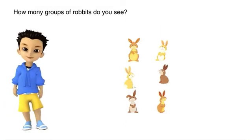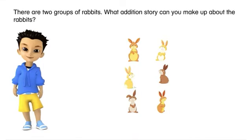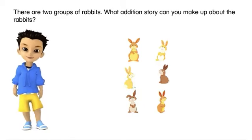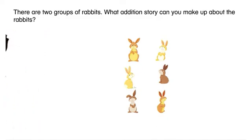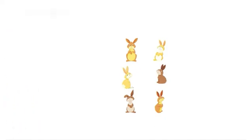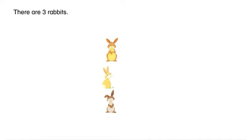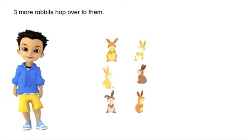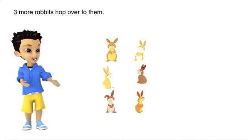How many groups of rabbits do you see? There are two groups of rabbits. What addition story can you make up about the rabbits? There are three rabbits. Three more rabbits hop over to them. That's a lot of rabbits!